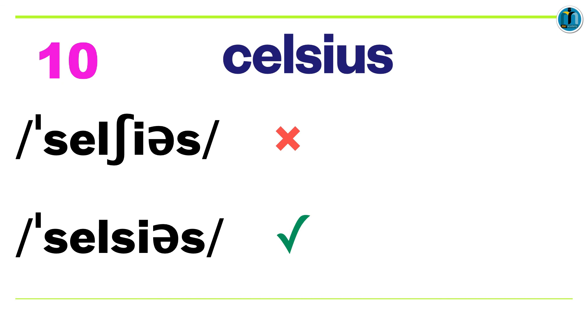And the last word of this episode is C-E-L-S-I-U-S. Celsius? Wrong, if you don't mind me saying. It's Celsius. The third consonant sound is not SH, it's S.